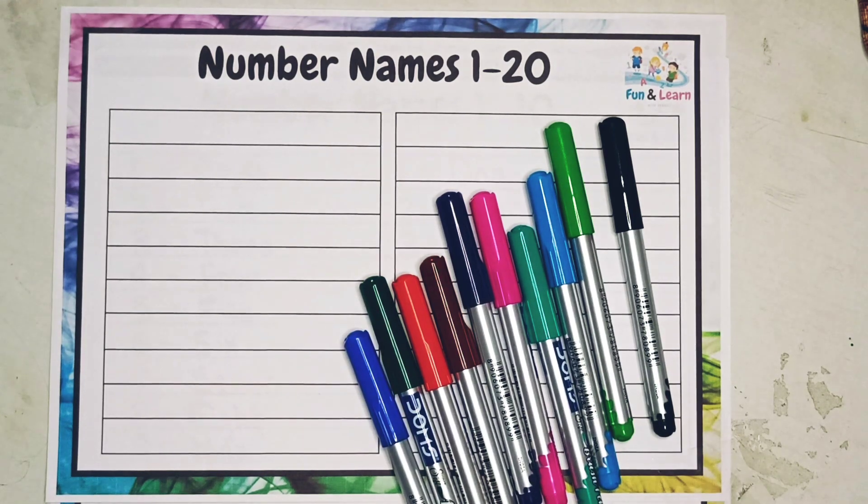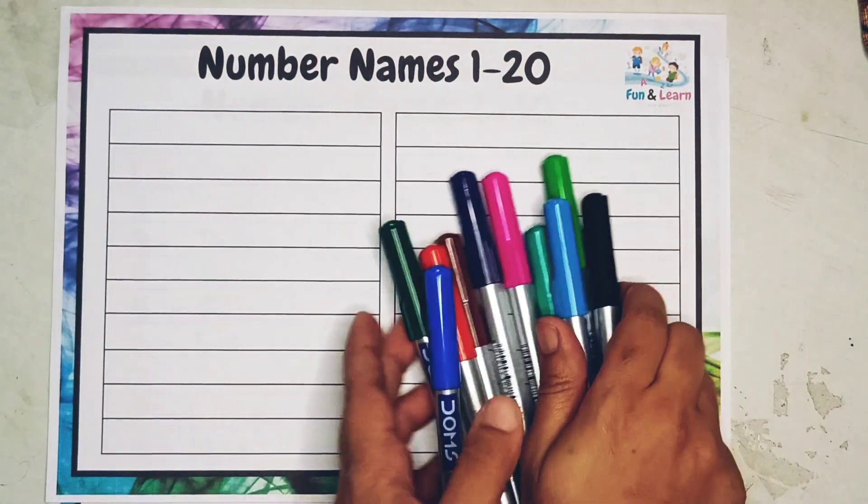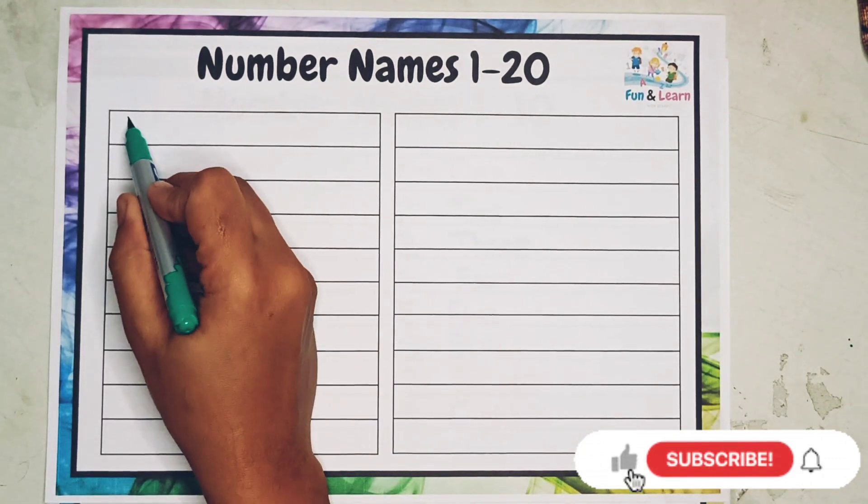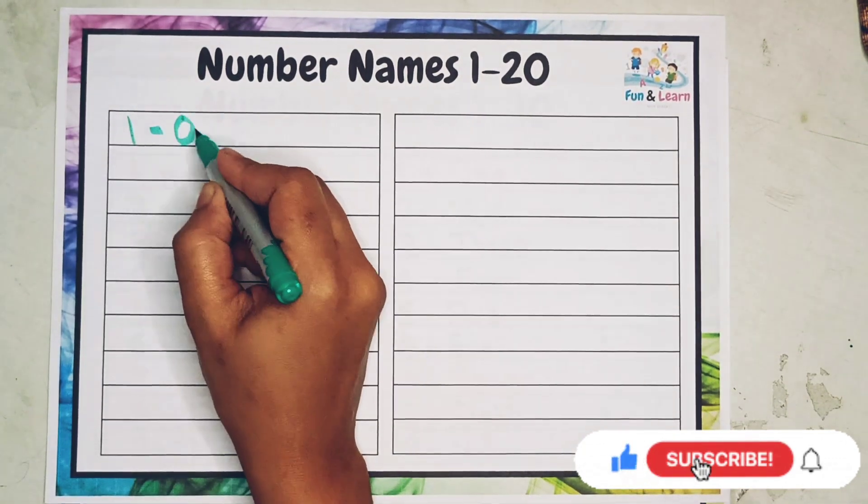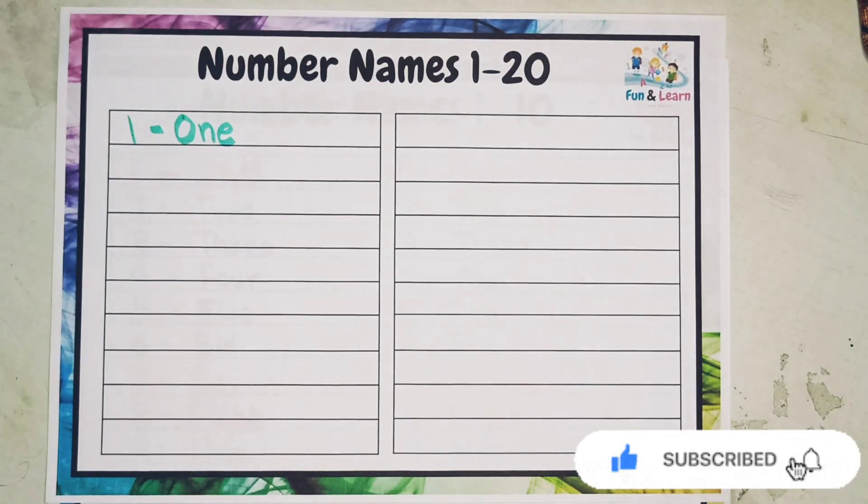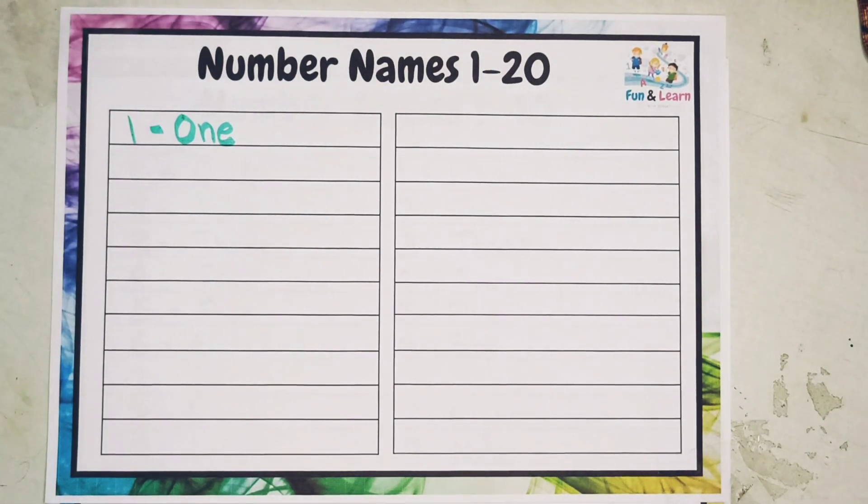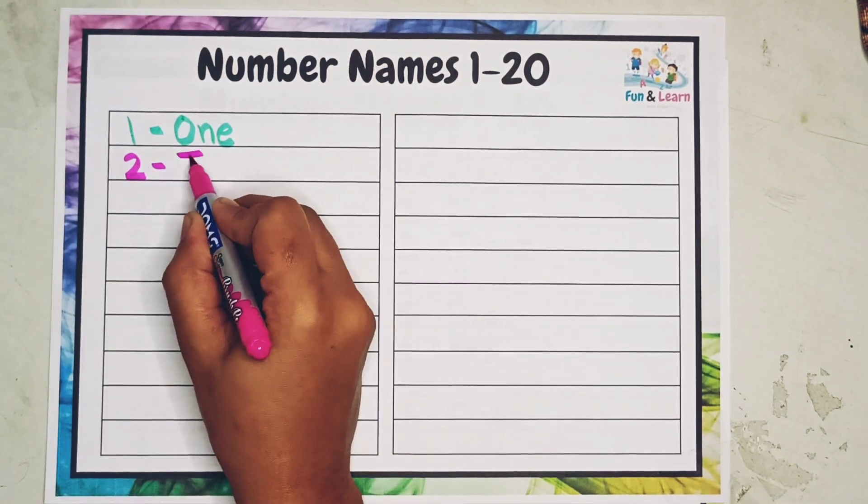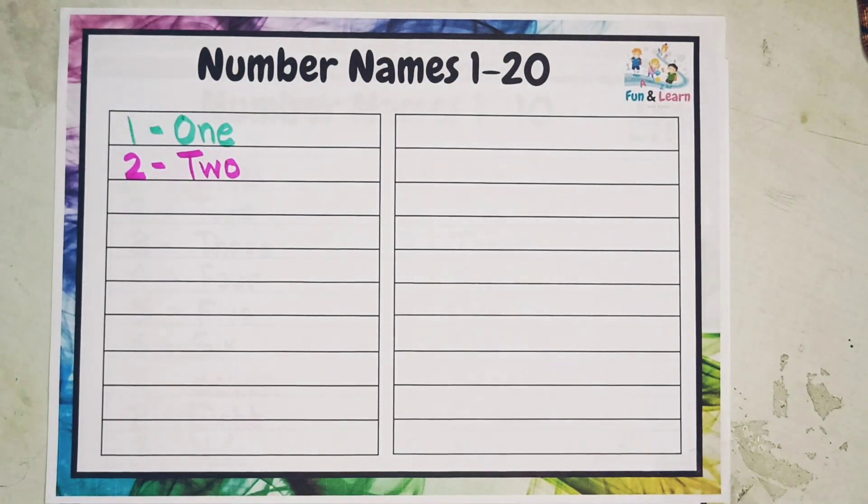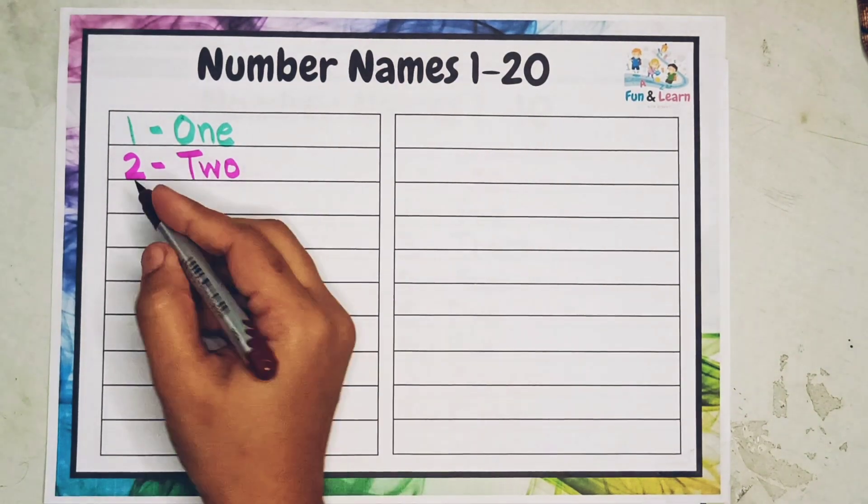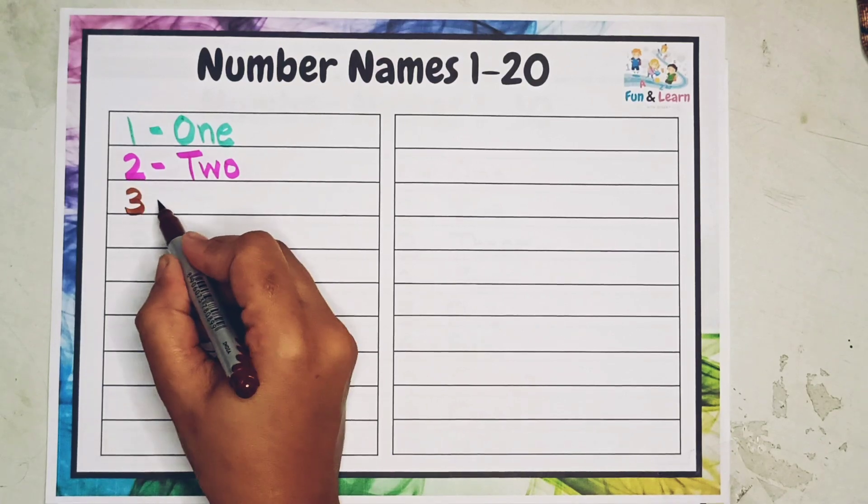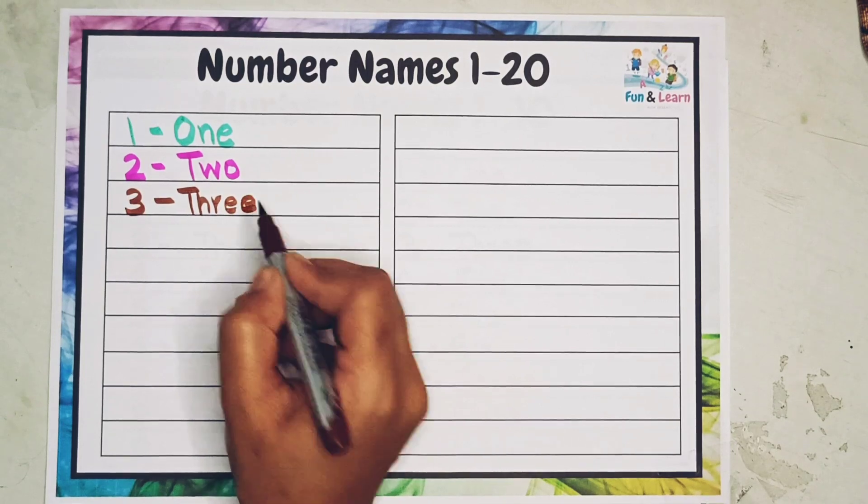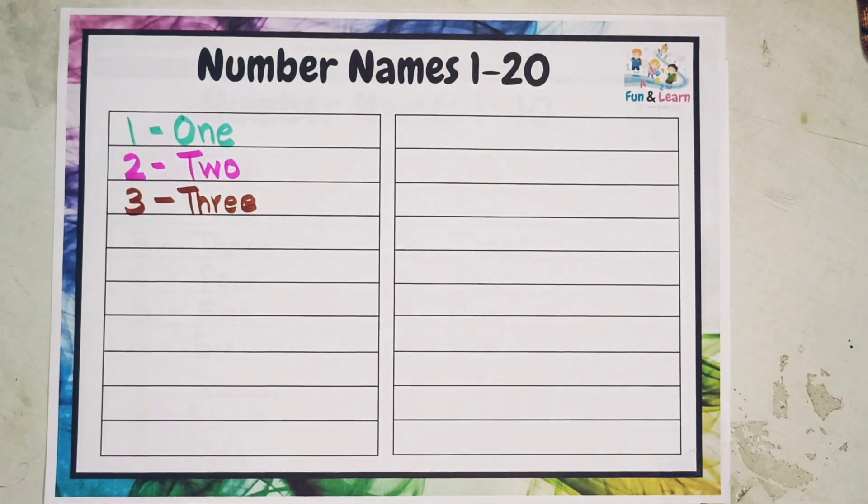Hello kids, let's learn number names from 1 to 20 today. Let's start. Our first number is 1, written as O-N-E, one. The next number is 2, written as T-W-O, two. Next is 3, written as T-H-R-E-E, three. Repeat it once more: T-H-R-E-E, three.